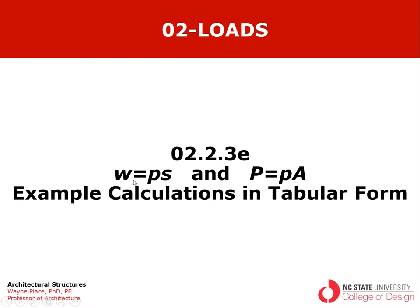We've been talking about W equals PS, where W is the line distributed force along a spanning member such as a beam or truss. P is an area distributed load in pounds per square foot or kips per square foot, and S is the width of decking being supported by the spanning member.